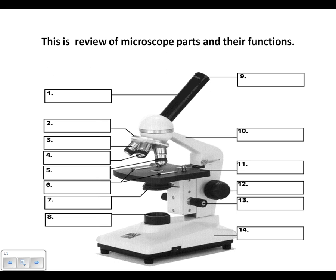Now we will review the microscope parts and their functions. Part number one is the body tube. The body tube connects the ocular, which is up here, to the objectives.